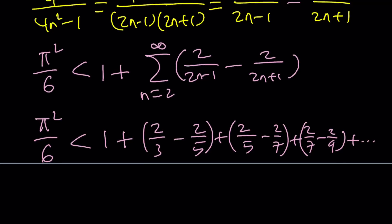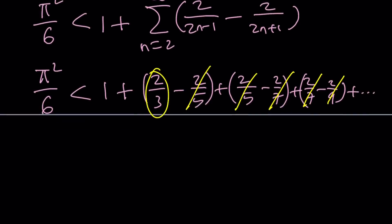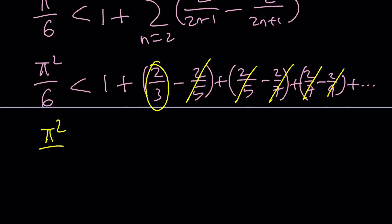And notice that everything is going to cancel out, like negative 2 over 5, 2 over 5, this one, that one, everything else except for 2 thirds. So that's the only thing that's left. In other words, pi squared over 6, and this is a really nice upper bound, is less than 1 plus 2 thirds, which is 5 thirds. And guess what? This is going to turn into something amazing.